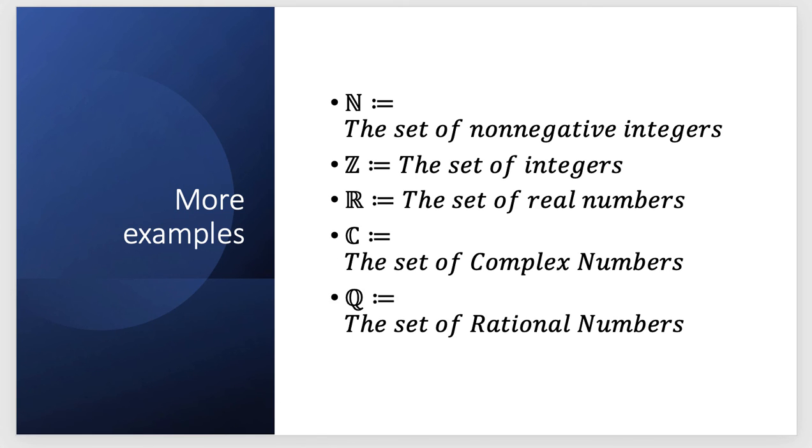Some sets are common and because they are common we have symbols for them. You've seen this before I'm certain. The set of natural numbers, integers, real numbers, complex numbers, and rational numbers.